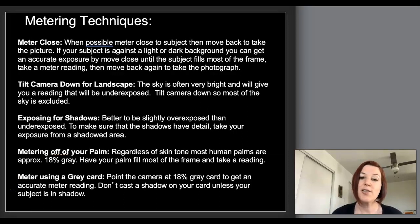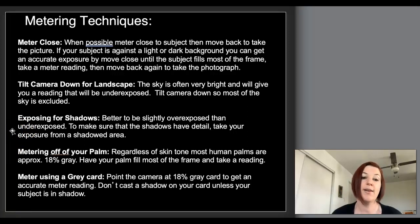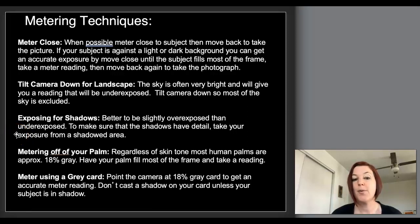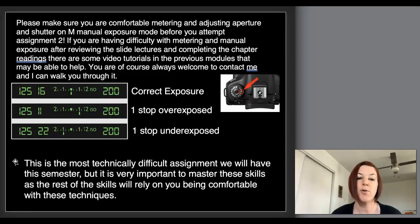For landscapes, it's usually the bright sky that is throwing off your exposure. So if you tilt the camera down so that most of the sky is excluded, you'll have a better exposure for the more mid-toned landscape. Exposing for shadows — especially if you're photographing in a bright area like the beach, the desert, or the snow, somewhere where things are mostly brighter than mid-toned — it's better to expose for shadows, as the shadows are going to be closer to mid-toned than the rest of the scene. Metering off your palm is kind of a last resort. You put your palm in front of your lens, making sure it's not blocking the light, and meter off your palm. Regardless of skin tone, human palms are around mid-toned — 18% gray — so that will usually give you an okay exposure.